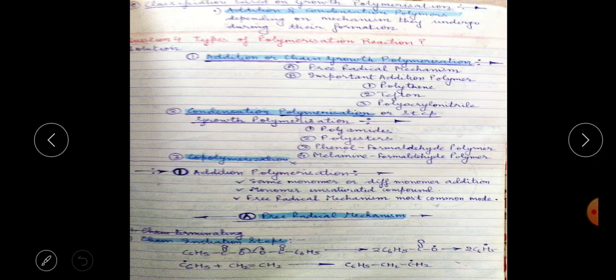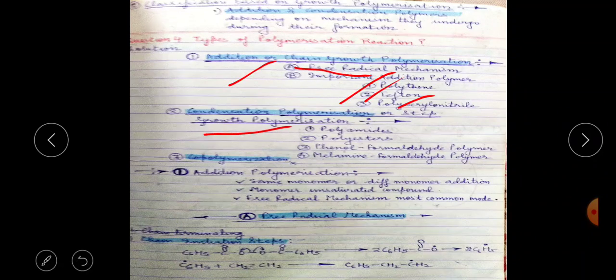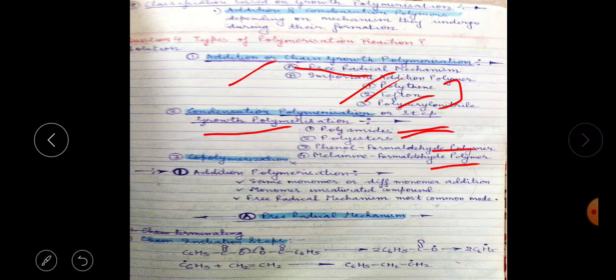Classification on the basis of growth polymerization: we have to study addition and condensation. Addition polymerization involves a free radical mechanism. Condensation polymerization is step-growth polymerization. Examples of addition polymers: polythene and Teflon. Examples of condensation polymers: phenol-formaldehyde (bakelite) and melamine-formaldehyde — these produce byproducts.